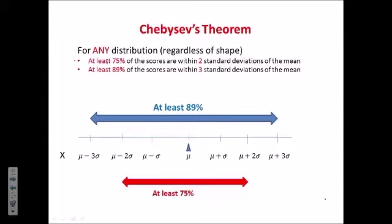Chebyshev's Theorem is very important because it works for any distribution, regardless of the shape of the distribution. So if we have a distribution with a certain mean mu and a certain standard deviation sigma, if we mark off on the number line one standard deviation above the mean, that would be mu plus sigma. Another tick above the mean would represent mu plus 2 sigma, and a third tick above the mean would represent mu plus 3 sigma, where each of these intervals is the standard deviation. Similarly, if we measure one standard deviation below the mean, this tick represents mu minus sigma, mu minus 2 sigma, and mu minus 3 sigma.